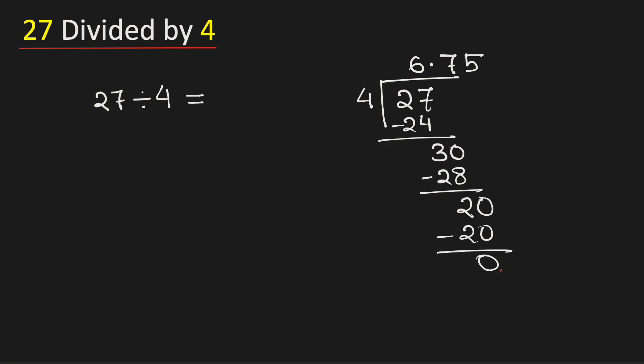As we have obtained the number 0, so we will stop. Therefore 27 divided by 4 is equal to 6.75. And this is our final answer. Thank you for watching.